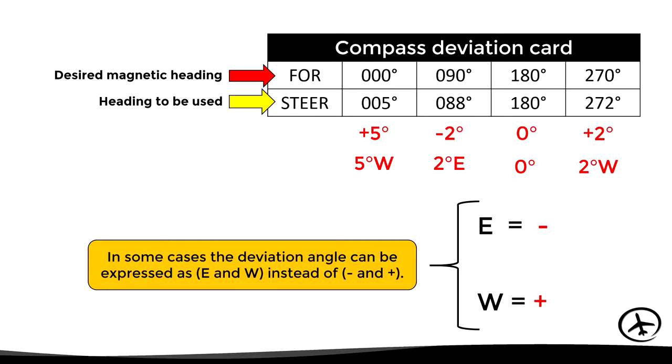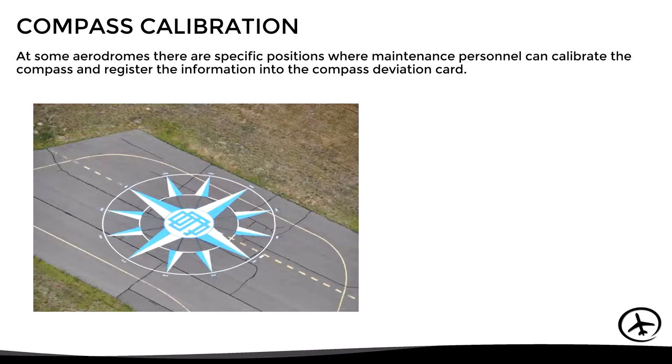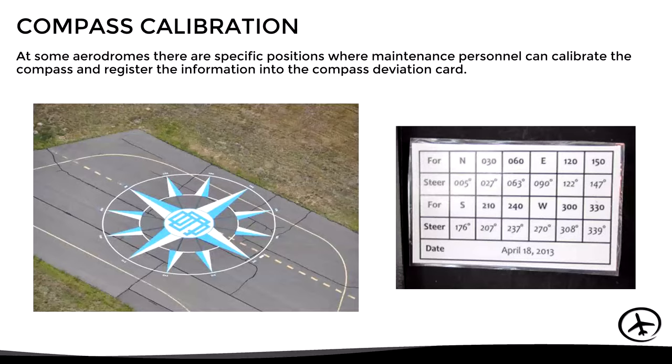How are these deviation values determined and published? At some airports there are specific positions where maintenance personnel can calibrate the compass and register the information into the compass deviation card. The aircraft is aligned with different headings in a compass rose marked on the ground with the engine running, and the maintenance personnel registers the different compass readings to determine the deviation for each heading. This procedure must be accomplished at regular intervals or when new equipment is installed on the aircraft.